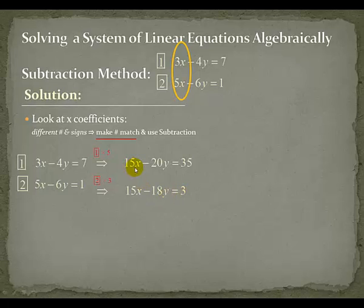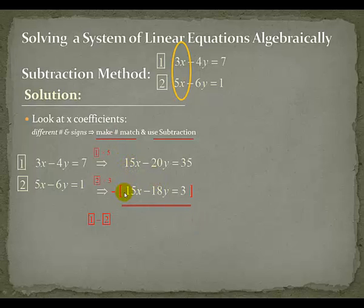Now notice that both equations have 15x and 15x. This is what is going to allow us to use our subtraction method. When both the coefficients are the same number and they're both positive, we use subtraction. So 15x take away 15x will yield 0.